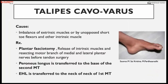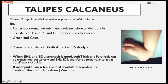Calcaneus varus deformity presents with forefoot varus and pronation and significant cavus deformity; it results from imbalance of intrinsic muscles and unopposed short toe flexors. Treatment is Steindler's fasciotomy from the calcaneum, transfer of peroneus longus to the base of the second metatarsal, and transfer of extensor hallucis longus to the neck of the first metatarsal to lift the forefoot.